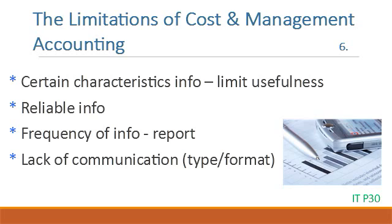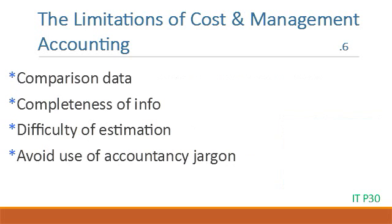6. For cost and management accounting information to be useful, it needs to contain certain characteristics; if it does not, that limits its usefulness. Limitations include: the reliability of information — it is only useful if it is reliable; the frequency of reporting — if information is not received when needed, it is not very useful; lack of communication between the manager and the accountant, leading to information not being in the type or format the manager needs; comparison data — care must be taken when comparing data because if prices change, the comparison may no longer be valid; and completeness of information — if information is not complete, that limits its usefulness.